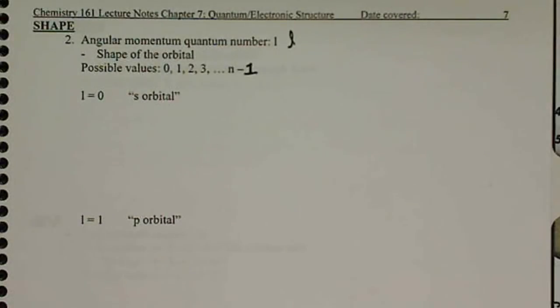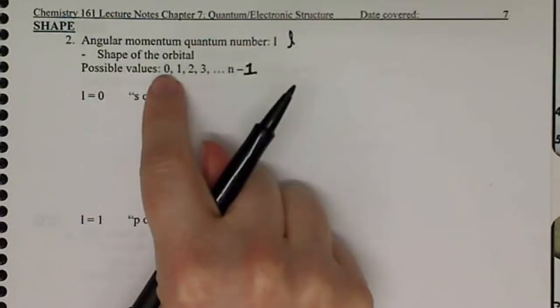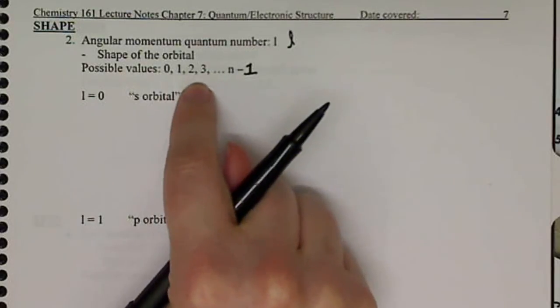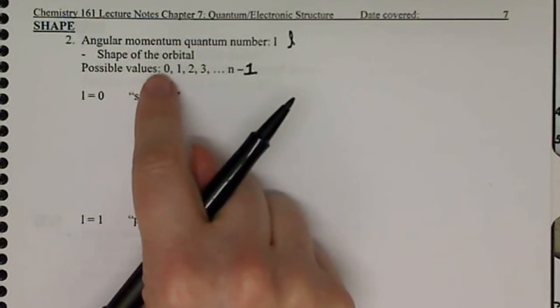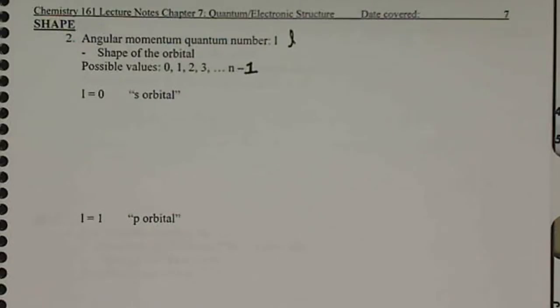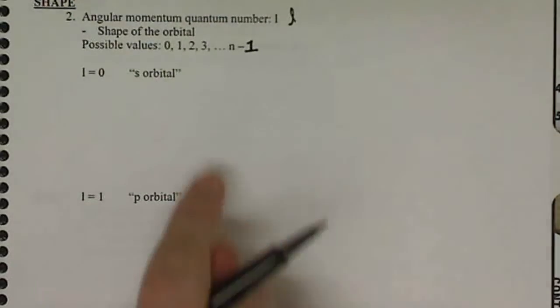So n kind of dictates what l can be, what its potential is. So l can potentially still exist up to infinity minus 1, but not likely just because n is also not likely to be infinity. So we're going to focus on what it means when l equals 0, 1, 2, and 3. These are kind of the primary l numbers, and we want to look at what each of these four numbers mean for us, and it tells us a different shape.